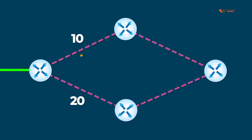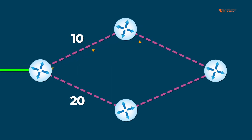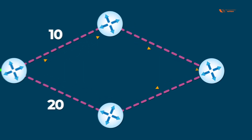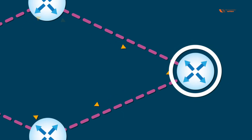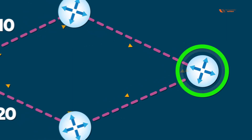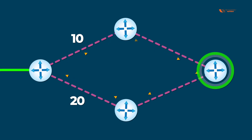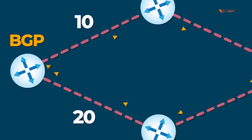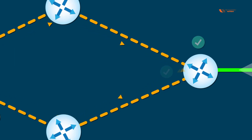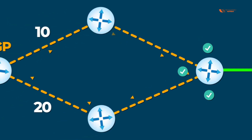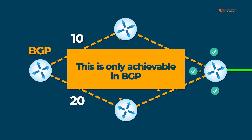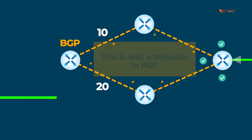If you want all your incoming traffic to come from a specific side, without touching that router or the complete internet connectivity, you put BGP configuration here and automatically all your internet traffic — Google, Facebook, whatever — they will understand and follow this path. This is only achievable with BGP.